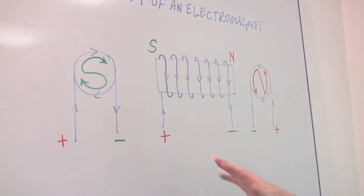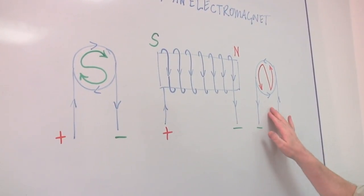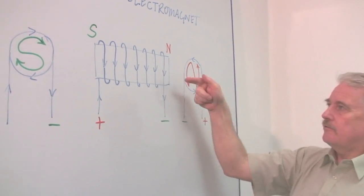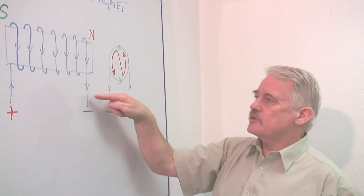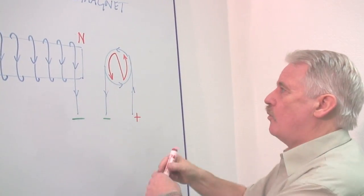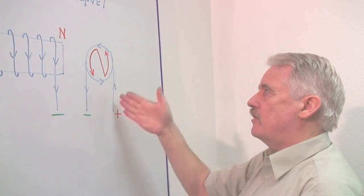Now what I've got here are two diagrams looking from the end. And if you look from this end, you can see that this will be on your left hand side. The current going down will be on your left hand side and the current going up,